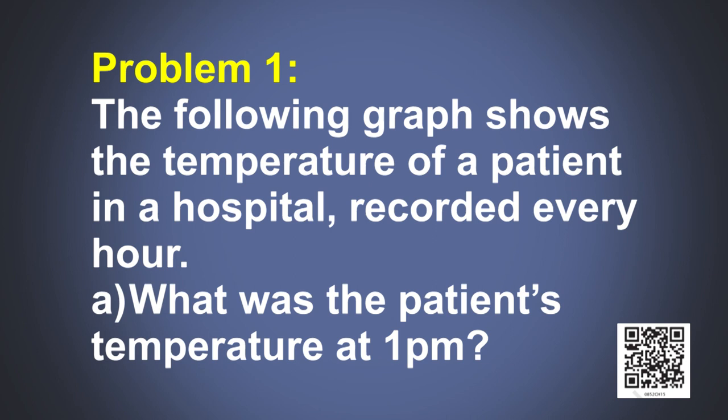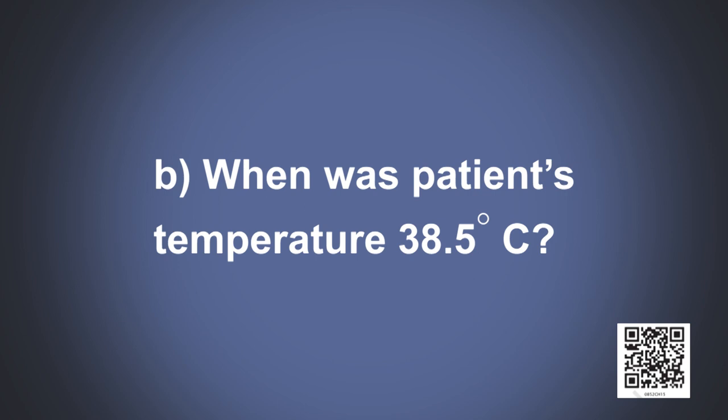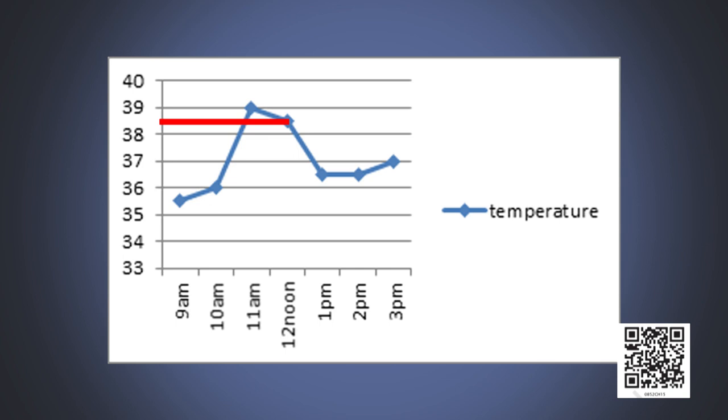The following graph shows the temperature of a patient in a hospital recorded every hour. What was the patient's temperature at 1 pm? Now look at this graph. Let us draw a vertical line at 1 pm. It will meet our line graph at this point. Then what is the height of this point? It is 36.5 isn't it? So the patient's temperature at 1 pm is 36.5 degrees celsius. So here the next question is when was the patient's temperature at 38.5 degrees celsius? Now look at the graph and draw a horizontal line at 38.5. It meets at this point. Then draw a perpendicular line through this point to x axis. Where it will meet on x axis? At 12, right? So at 12 noon, the patient's temperature is 38.5 degrees celsius.